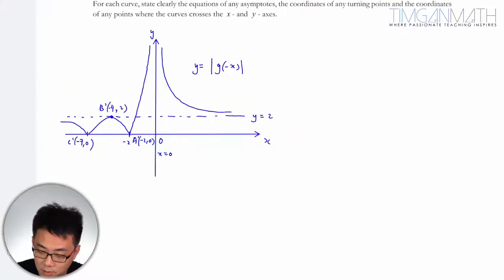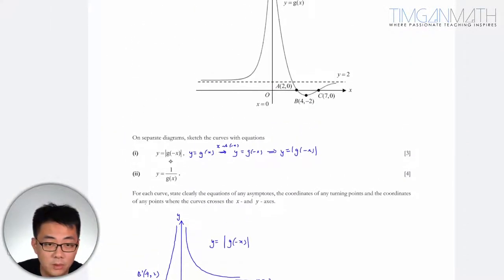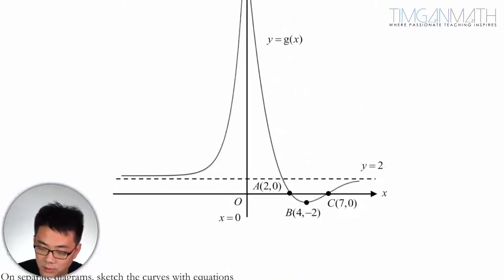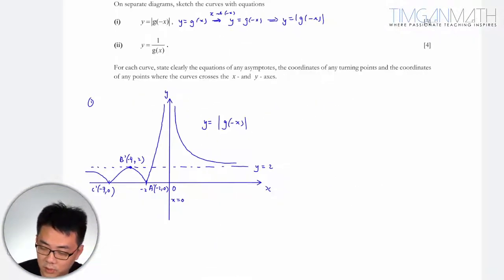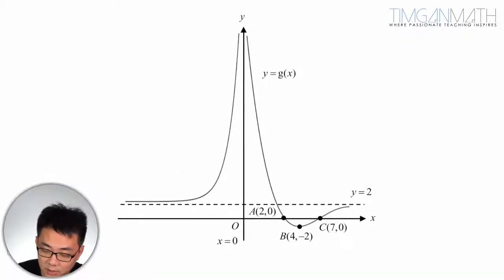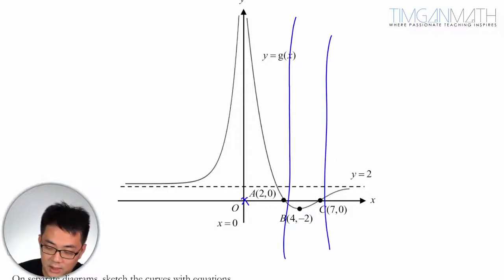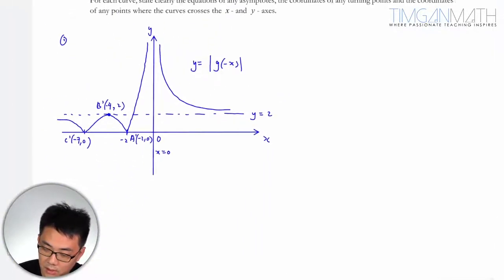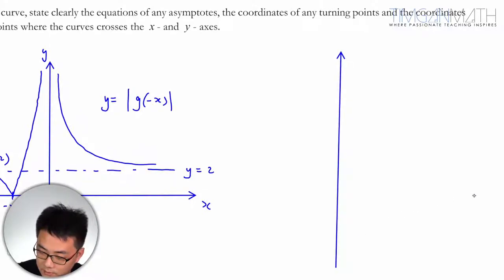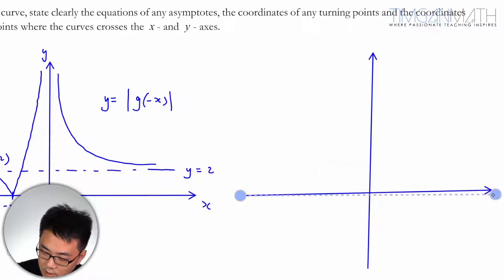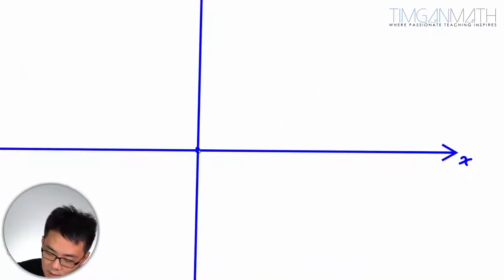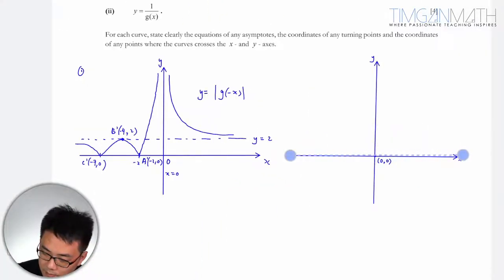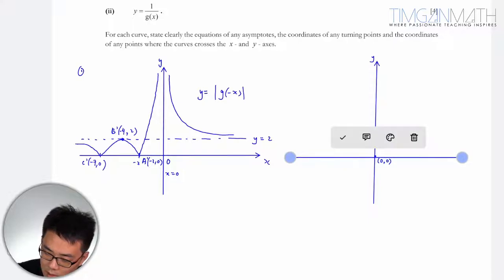Now for the subsequent part, we need to take the reciprocal of this graph. The key thing to note is that the vertical asymptote will become the x-intercept. So the vertical asymptote at x equals 0 becomes the x-intercept at (0, 0).